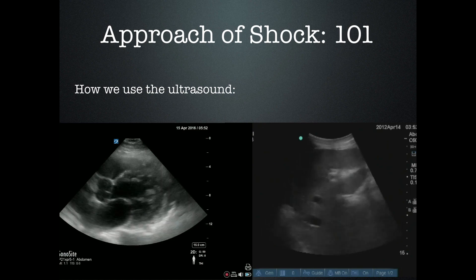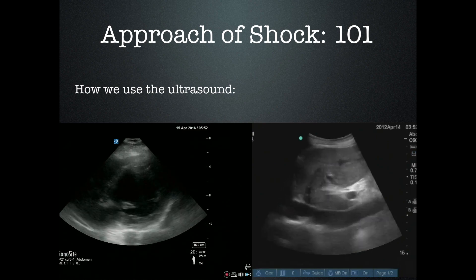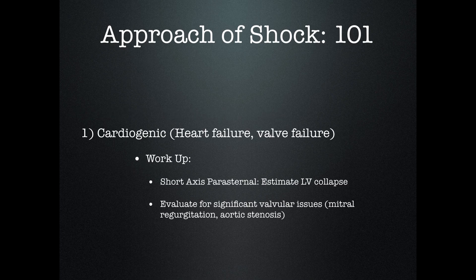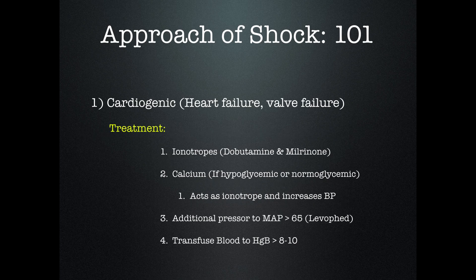Third case — we have a patient in heart failure. IVC is completely dilated. This is cardiogenic shock. You go look at a better view of the heart; this is where you can start doing a little more advanced work — looking at your walls, seeing if the patient has acute wall motion abnormalities, looking at the valves to see if there's any indication for severe aortic stenosis. You don't have to know a ton about echocardiography to look for these things. Treatment depends on what you find: inotropes if the heart's not pumping well, calcium which works as an inotrope, additional pressors if inotropes are not working, and transfusion if indicated — we're using a threshold of around eight now.